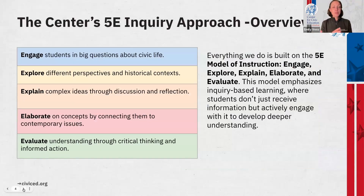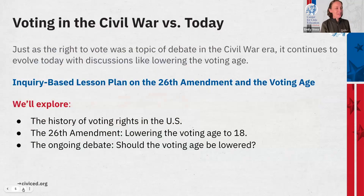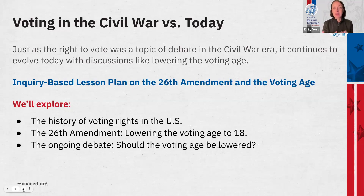Our approach to all instructional materials follows an inquiry approach — the 5E model, which allows students to build on engagement through exploration, elaboration, and evaluation. Students work more and more deeply into a subject and develop much deeper understanding. As Sarah mentioned, voting in the Civil War versus the modern era is a great entry point — you can reach this topic whether you are working on a unit about elections, the Civil War, or the evolution of voting rights in the United States. We're going to talk about the 26th Amendment and the lowering of the voting age.